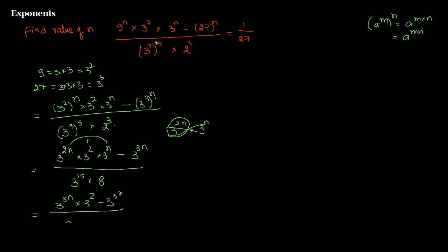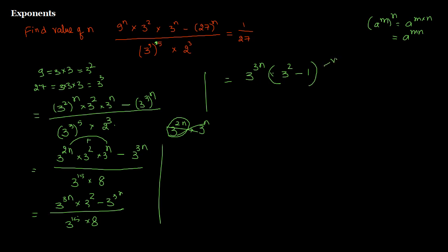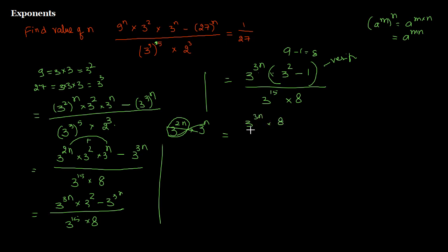Dividing by 3 to the power 15 times 8. Taking 3 to the power 3n as common, what remains is 3 squared minus 1. Verifying: 3 to the power n times 3 squared is the first term, and 3 to the power n times 1 is 3 to the power 3n — correct. So we get 3 to the power 3n times 8, divided by 3 to the power 15 times 8. The 8s cancel.